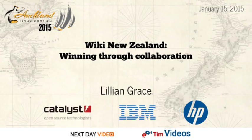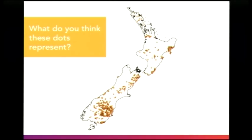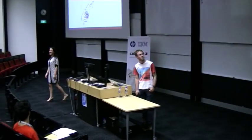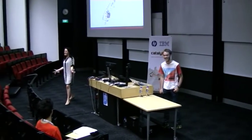All right, what do you think these dots represent? Data. What kind of data? What do you think the data represents? People without the internet.